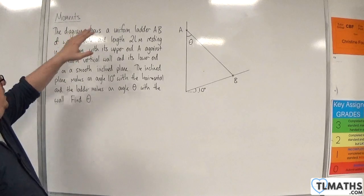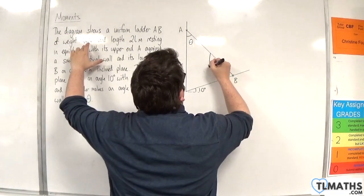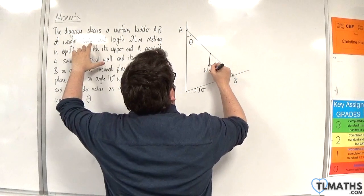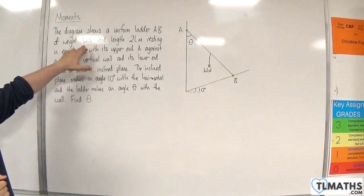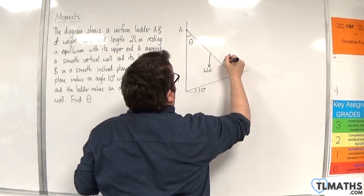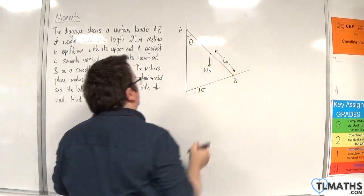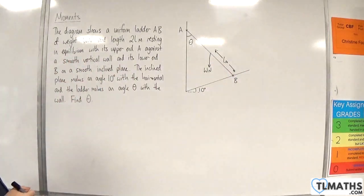We've got that it's a uniform ladder of weight W newtons, so we can draw on that the weight acts through the centre of the ladder, and it's of length 2L meters, so this distance is L.